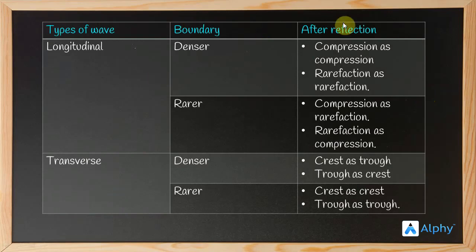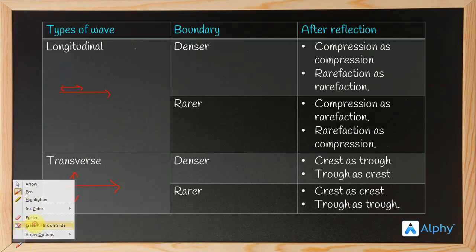Next, types of waves by boundary and reflection. Waves are two types: longitudinal waves and transverse waves. In transverse waves, this is the direction of propagation, and the particles oscillate perpendicular to it. In longitudinal waves, particles oscillate in the same direction as propagation. Sound waves are longitudinal waves.